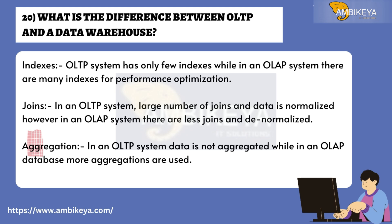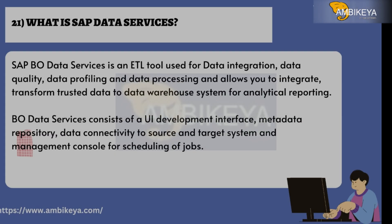Question 20: What is the difference between OLTP and a data warehouse? Indexes: an OLTP system has only a few indexes, while an OLAP system has many indexes for performance optimization. Joins: in an OLTP system there are a large number of joins and data is normalized; in an OLAP system there are fewer joins and data is denormalized. Aggregation: in OLTP data is not aggregated, while in OLAP more aggregations are used.